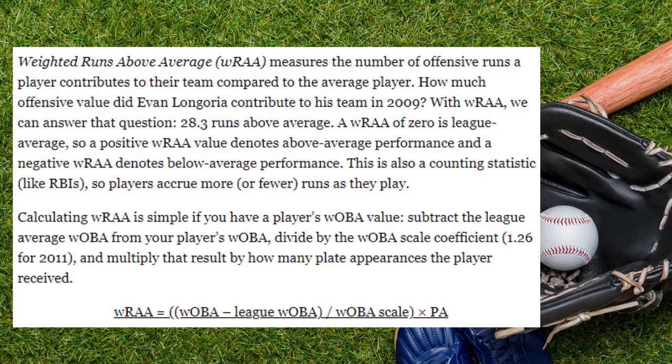One of the best things about WOBA is its ability to transfer over easily to a statistic called Weighted Runs Above Average, and that's what the name of the game is all about — runs. Weighted Runs Above Average equals WOBA minus the league WOBA, divided by the WOBA scale. In 2013 that scale was 1.15, and in 2023 it was 1.204. It tends to sit around that value. You also multiply by plate appearances to get your overall calculation.